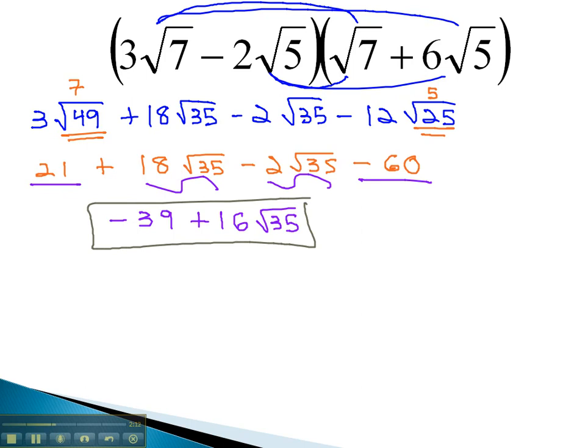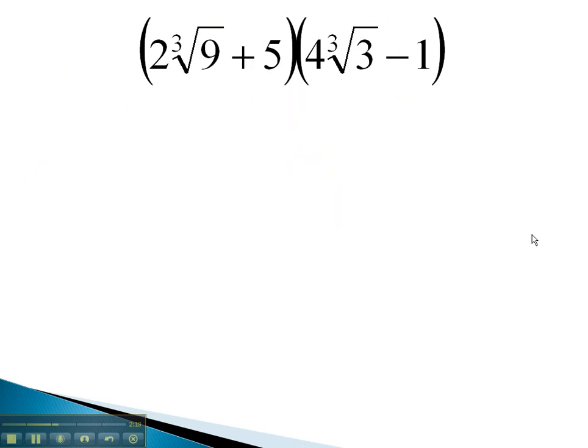Let's take a look at another example, where we have to use the foiling method to multiply the radicals together. In this problem, we'll start by distributing the 2 root 9th root, times the 4 cubed root of 3.